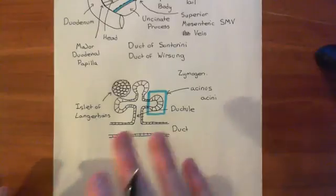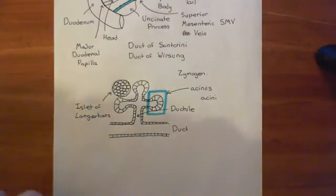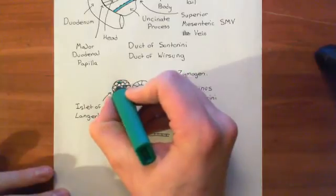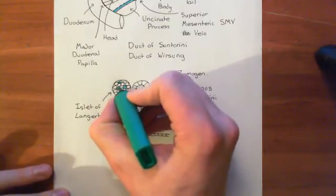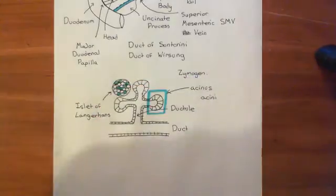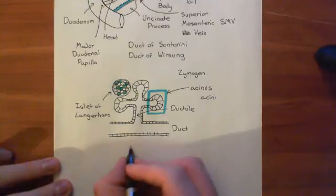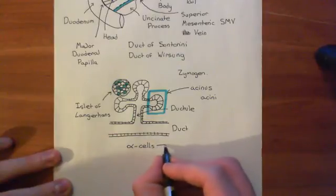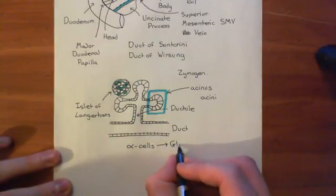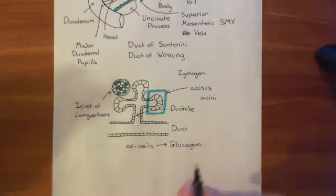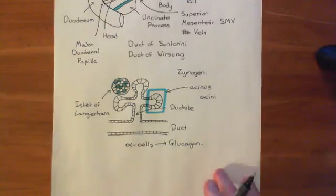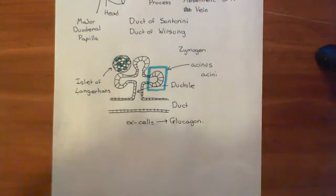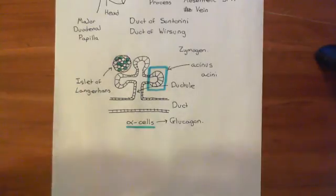There are three main types of cells within the islets of Langerhans. I'm going to colour them in different colours. The first type in turquoise represents the alpha cells of the islets of Langerhans. The product of the alpha cells is a protein called glucagon — that is their main product — which is going to be very important in the homeostasis of blood glucose level.